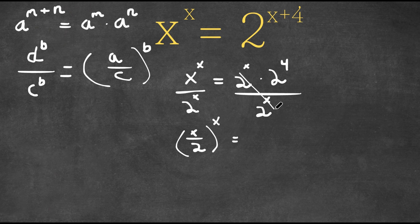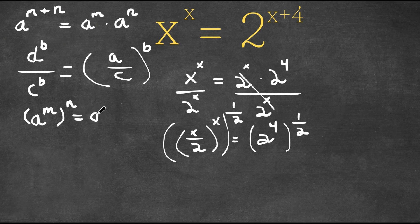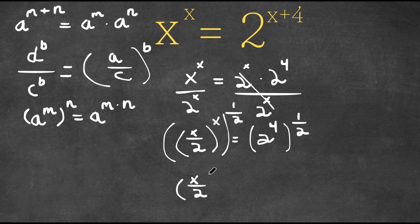This is equal to — these two cancel out — simply 2 to the power of 4. Now I'm going to take the power of 1 half on both sides. If we have something in the form a to the power of m to the power of n, this can actually be written as a to the power of m times n. So this gives us x over 2 to the power of x times 1 half, which is simply x over 2.